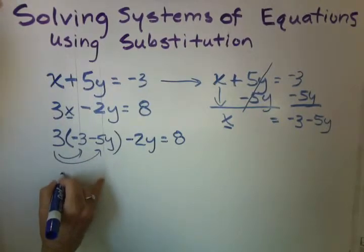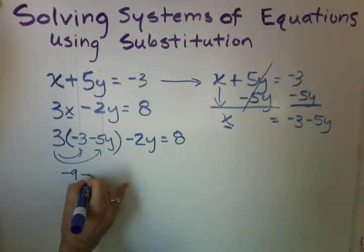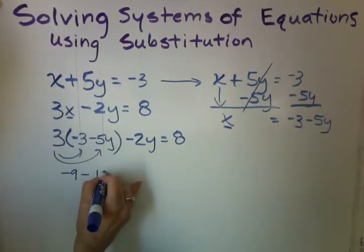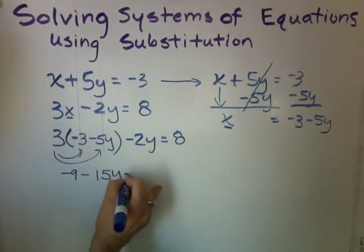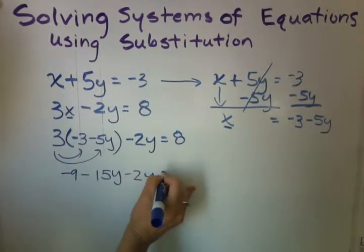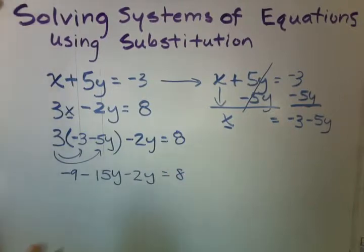We have negative 9 minus 15y minus 2y equals 8.